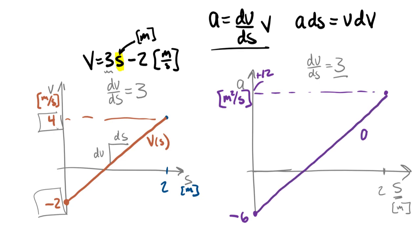So this is the acceleration as a function of position graph. Notice that if everything were a function of time, the derivative of a linear velocity would give a constant acceleration. But when velocity varies with position, we work through dv/ds. If dv/ds also varies with position, you'll need to plot points or derive the full equation. This gives an overview of working with velocity and acceleration as functions of position.